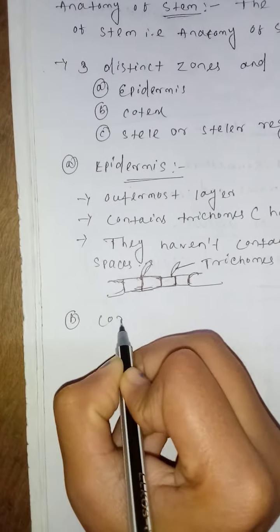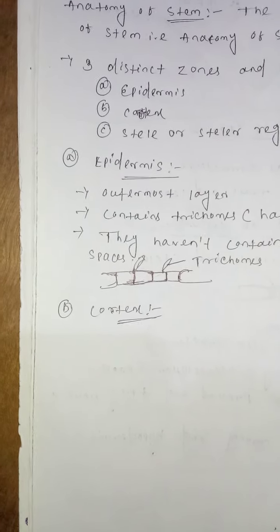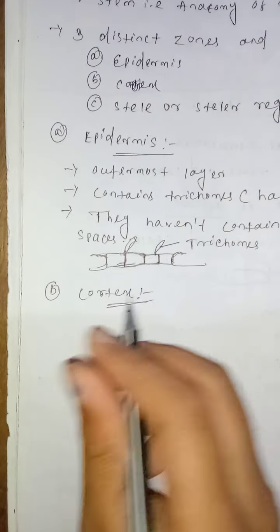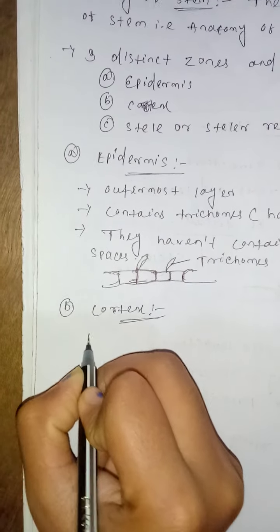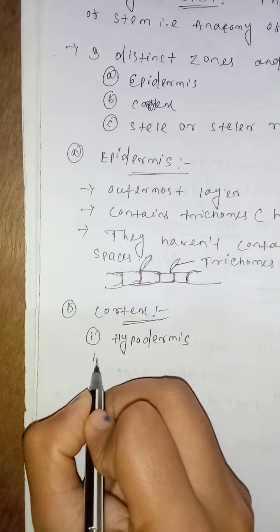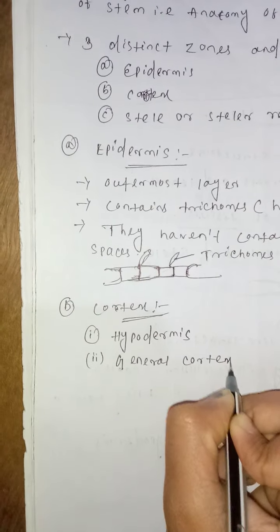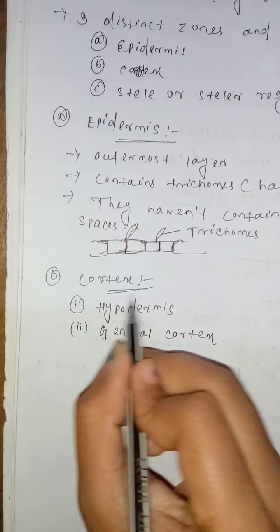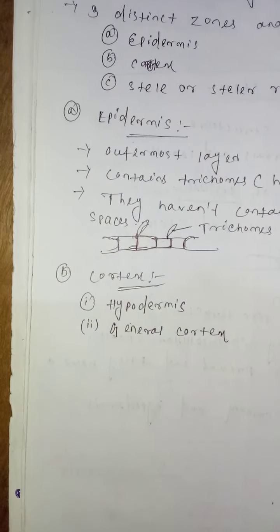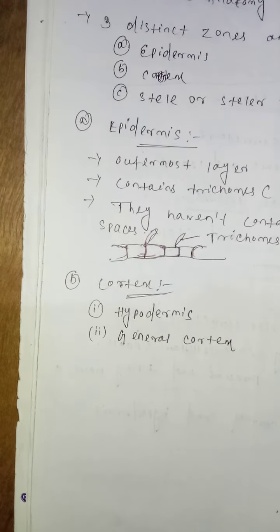The second zone is cortex. Cortex is present below the epidermis and it is divided into two types: first is hypodermis and second is general cortex. Now I will discuss hypodermis, which contains two to three layers.